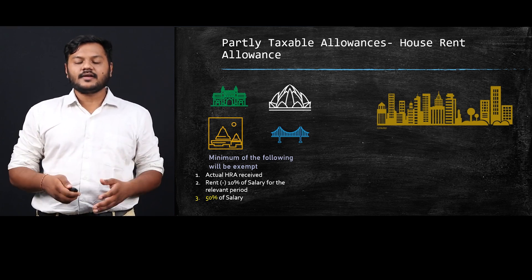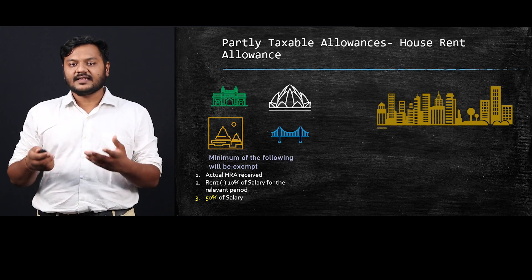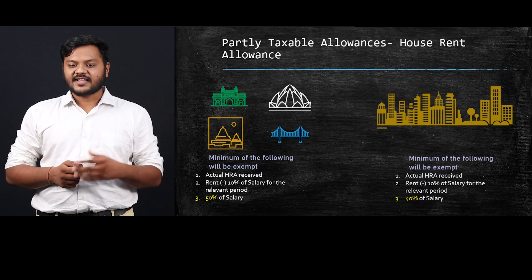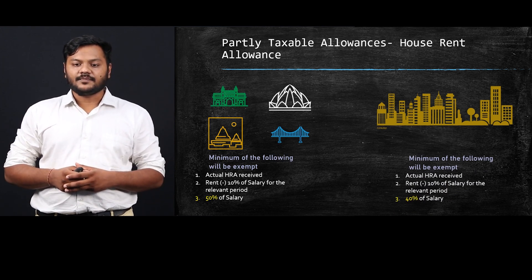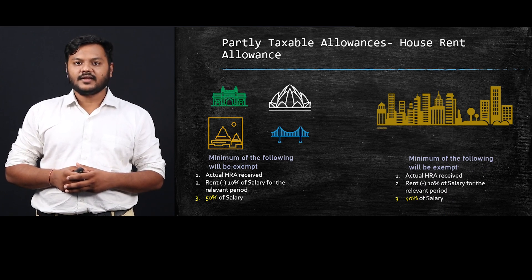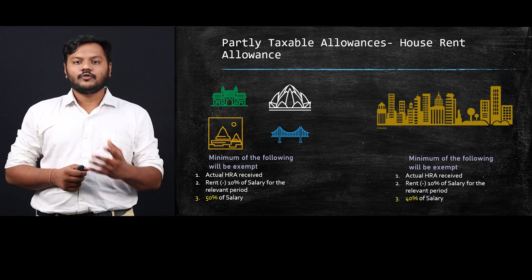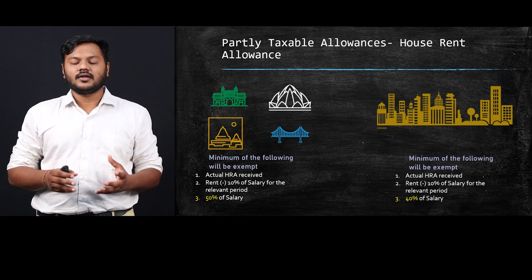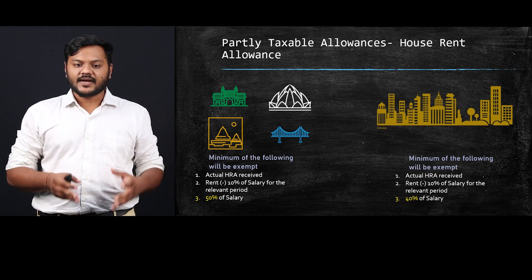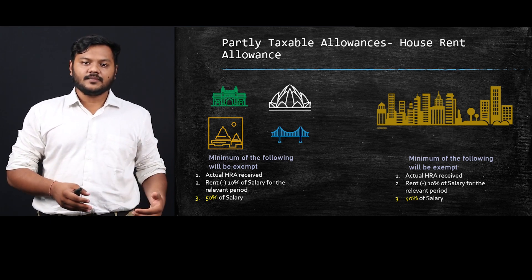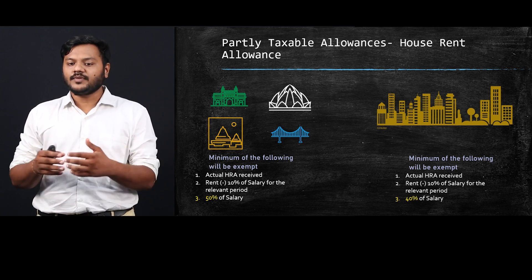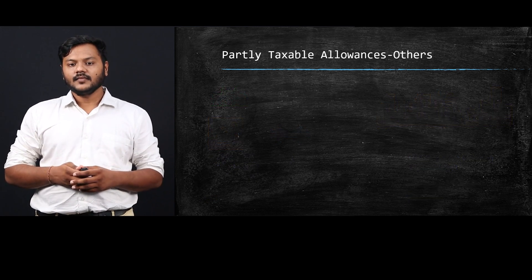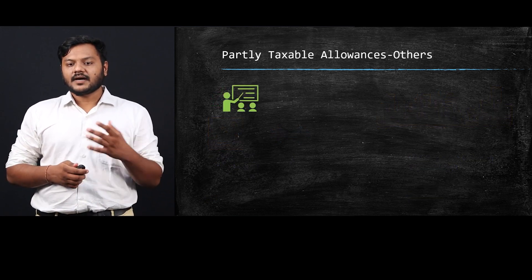If you are not living in a metro city — for example, Ahmedabad or any other city — the exemption is the lowest of: actual HRA received, rent paid to landlord minus 10% of salary, or 40% of salary. The only difference between metro and non-metro cities is that point three is 50% of salary for metro and 40% for other cities. The remaining conditions stay the same. This covers partly taxable allowances under HRA.